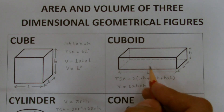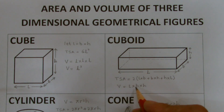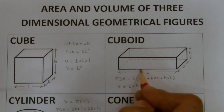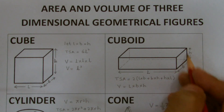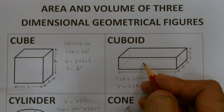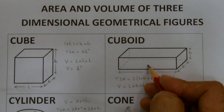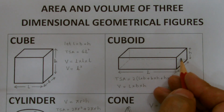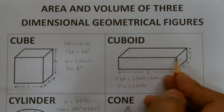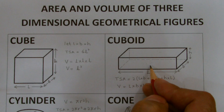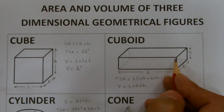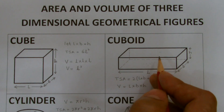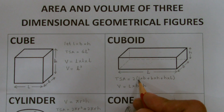Now for the cuboid, the length is taken as L, the breadth as B, and height as H. A cuboid has two parallel identical front and back faces, two identical top and bottom faces, and two identical side faces. To find the total surface area, I calculate the area of each pair of faces and then multiply by two, then sum them all up.